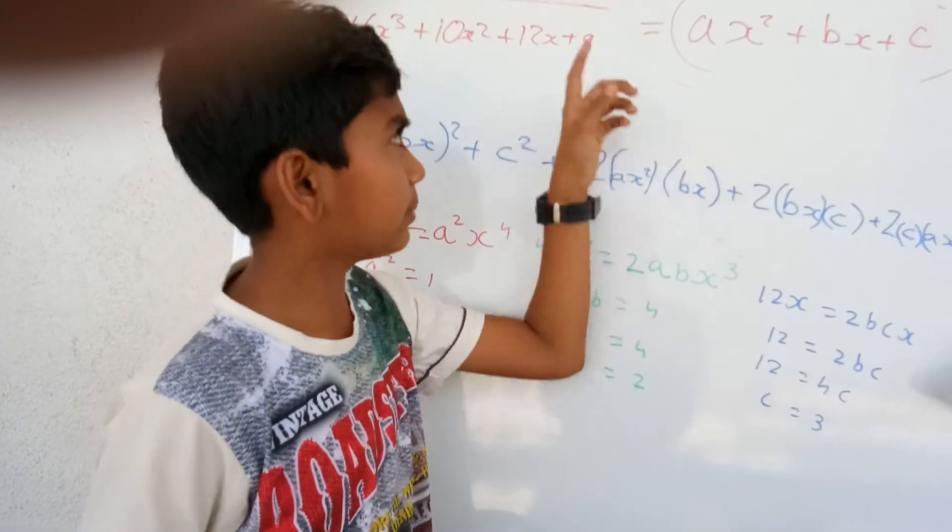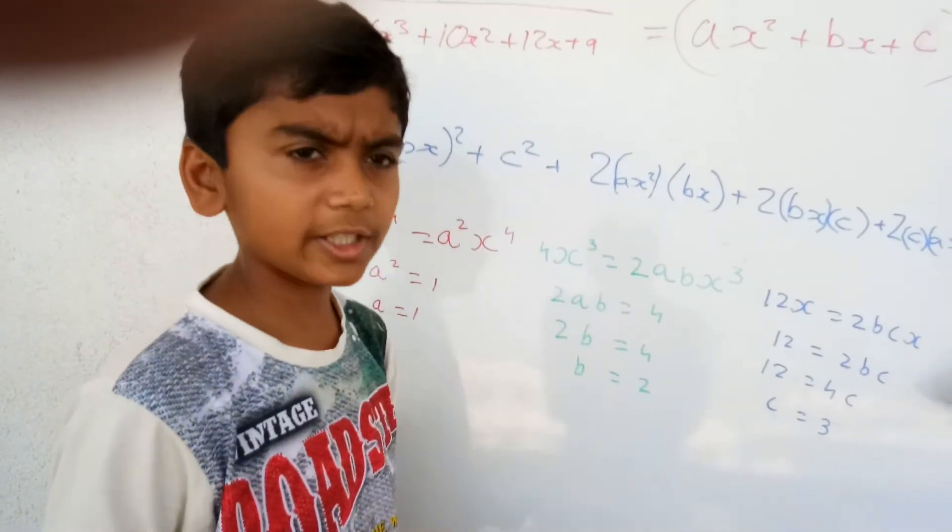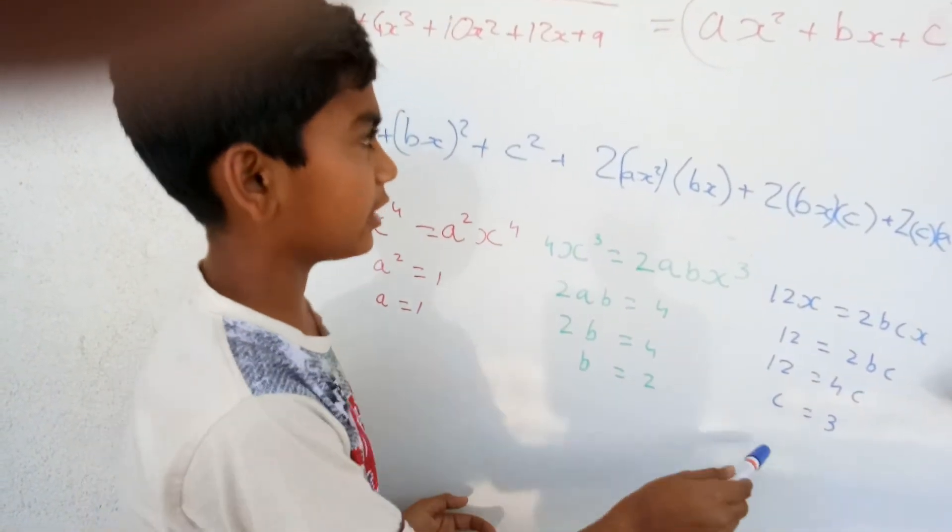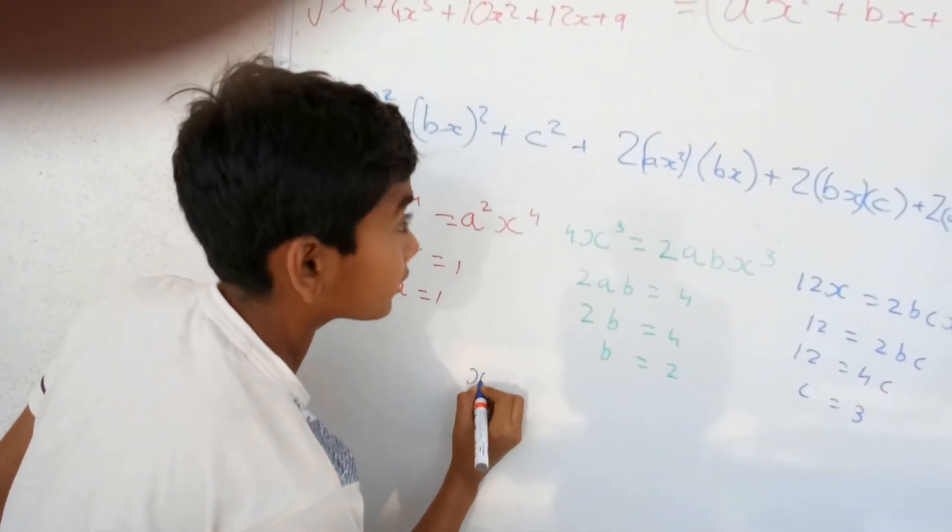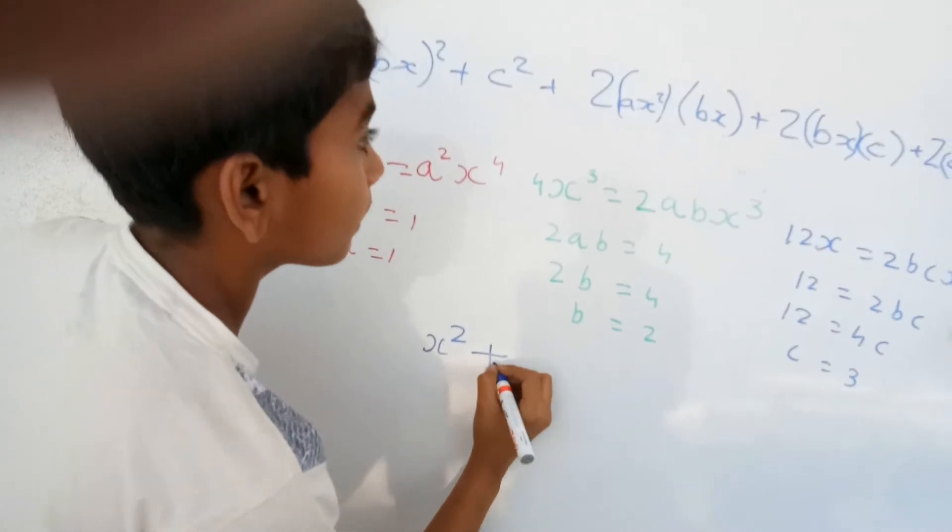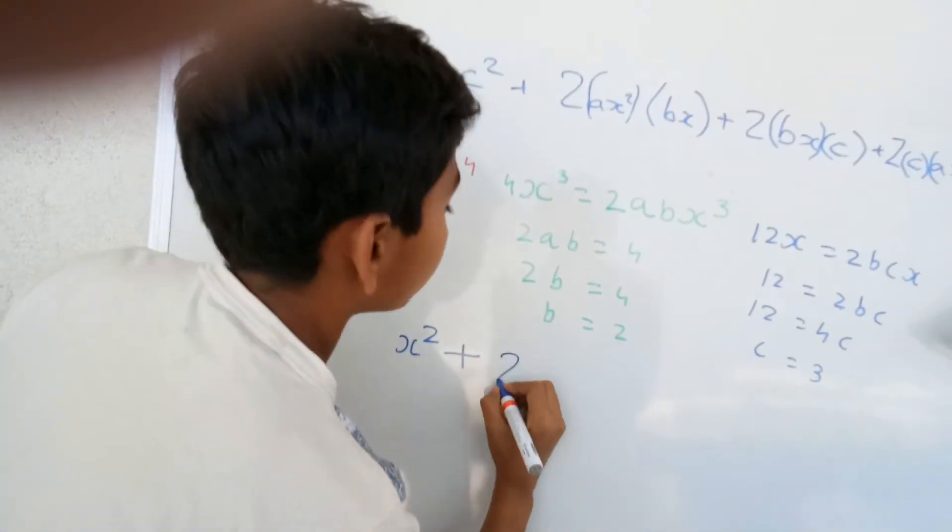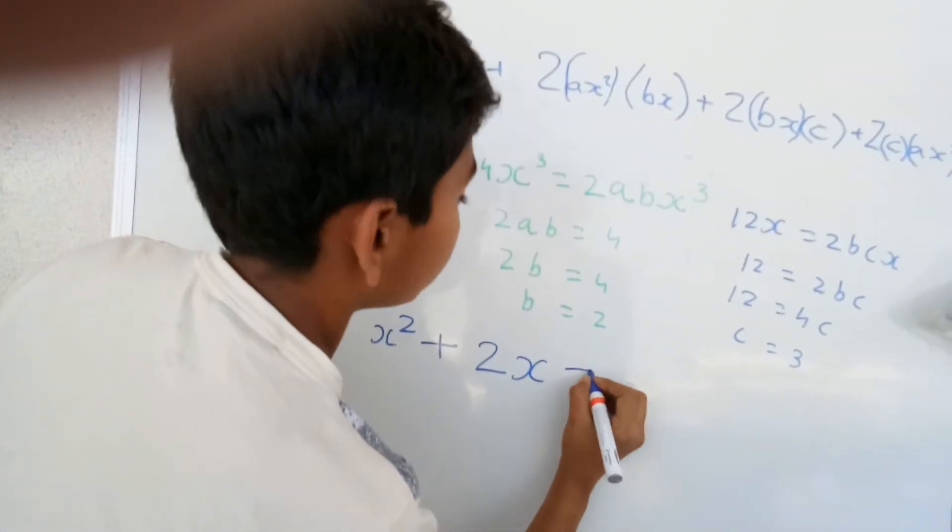Now, the question is find the square root of this polynomial. So, simply substitute the value for a, b and c in this form. We will get x square plus 2x plus 3.